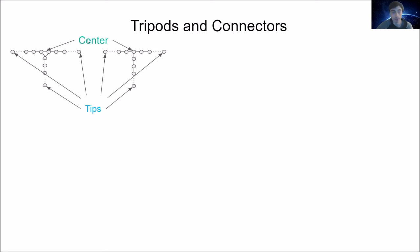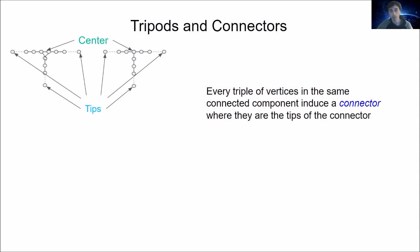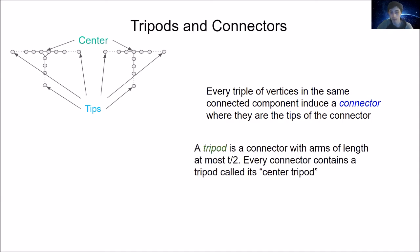Let me explain tripods and the closely related structure called connectors. Connectors look like keys and come in two types. Each connector has three tips — the endpoints of the connector — and a center. The first type has a single vertex as its center; the second type has a triangle as its center. Every triple of vertices in the same connected component induces a connector where they are the tips. A tripod is a connector with arms of length at most t/2 — essentially a connector with short arms emanating from the center.